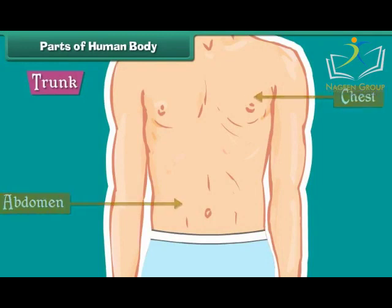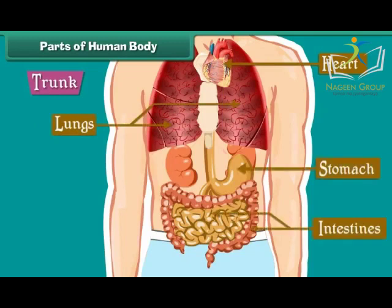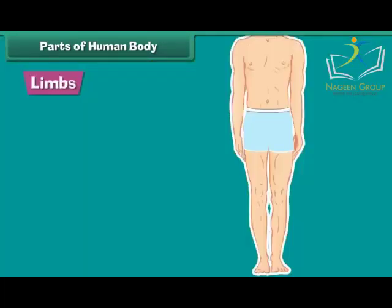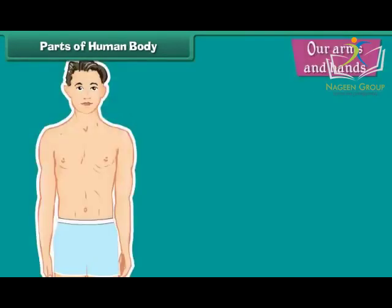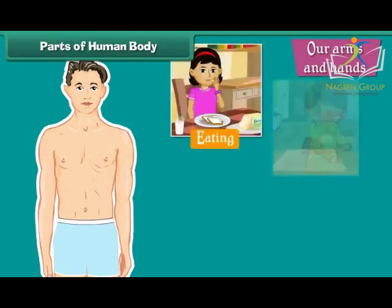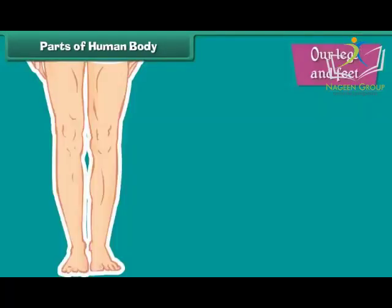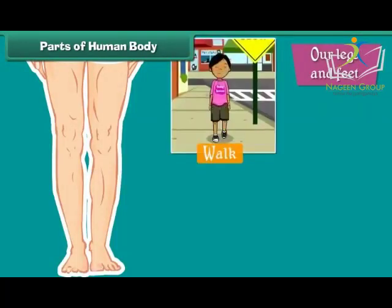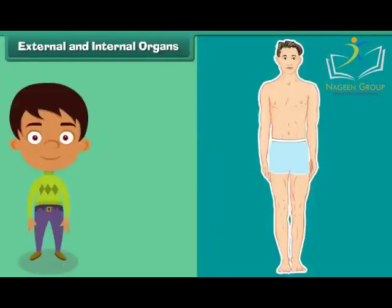Many important organs such as the heart, lungs, stomach, intestines, and kidneys are located inside the trunk. Limbs consist of a pair of arms, hands, legs, and feet. Our arms and hands assist us in eating, writing, playing, holding, and lifting things. Our legs and feet help us to walk, run, kick, and dance.